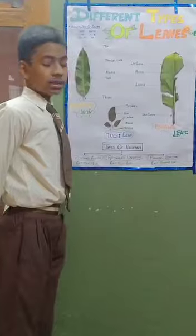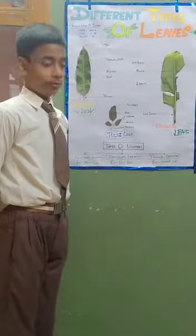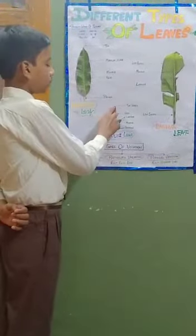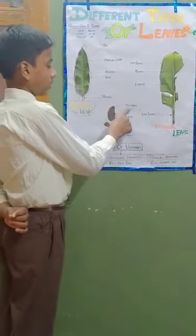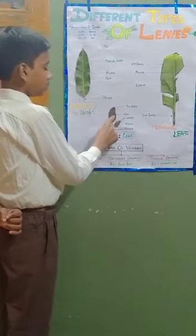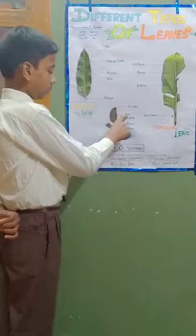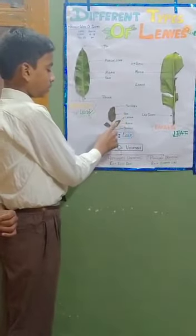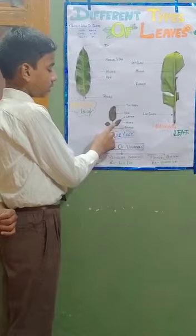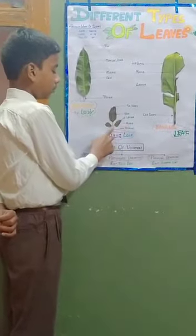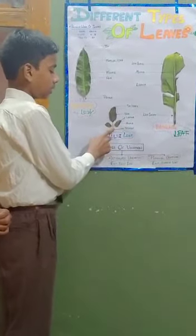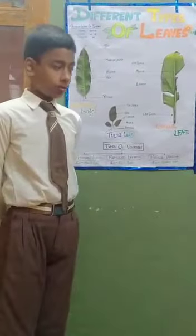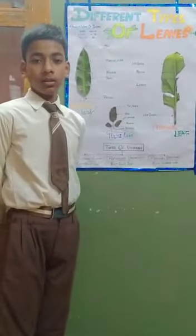Now the last, here we have a tulsi leaf. This part is denoted as a tip or apex. This part is denoted as a vein. This part is denoted as a lamina. This part is denoted as a midrib. And the last part is denoted as a stalk. Now we will discuss the types of venation.